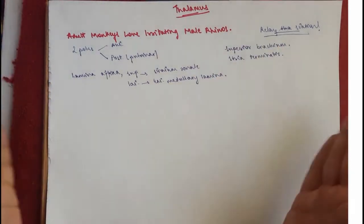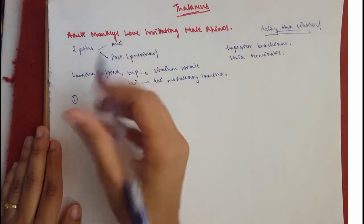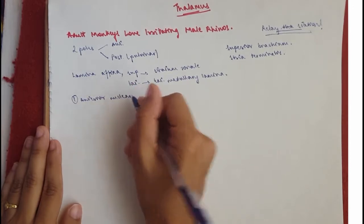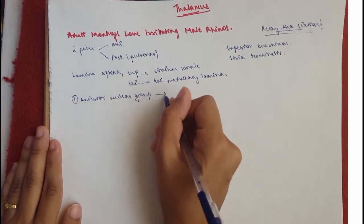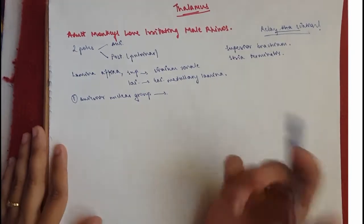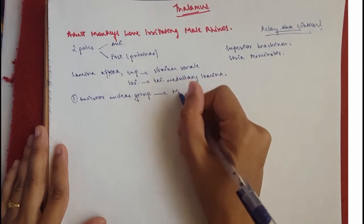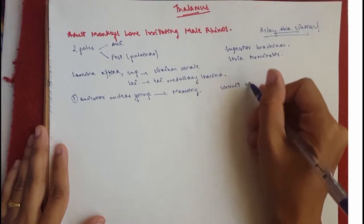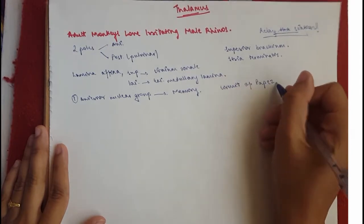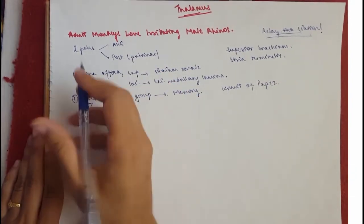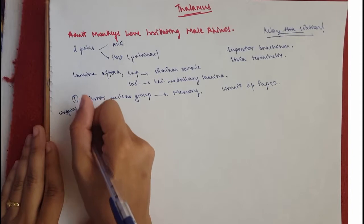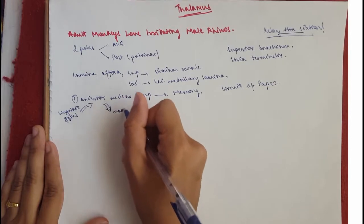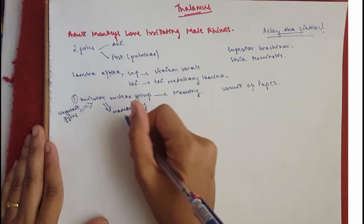All right, now we can move on to our mnemonic and the nuclear groups. So the first one would be the adult which is the anterior nuclear group and this group has to do with the limbic system because it's a part of the circuit of Papez for recent memory. So it receives from the cingular gyrus and it gives to the mammillary bodies and the hypothalamus and these two are a part of the limbic system.